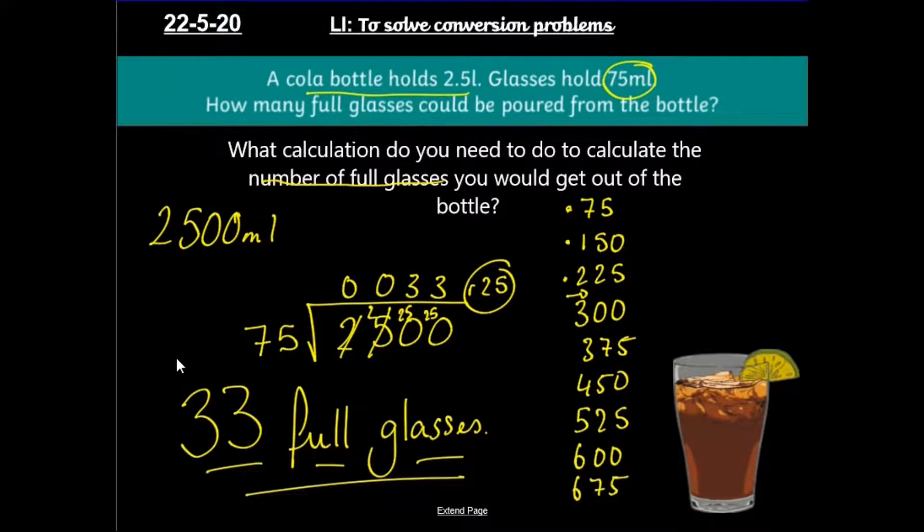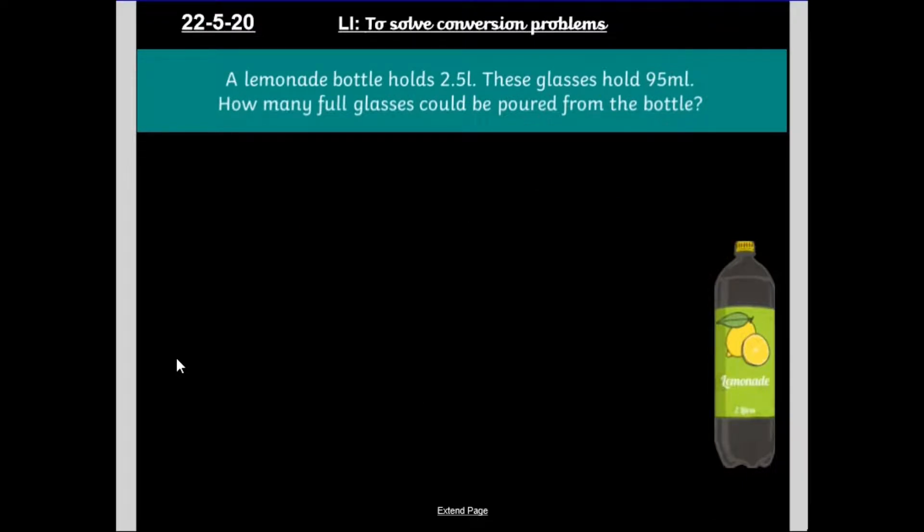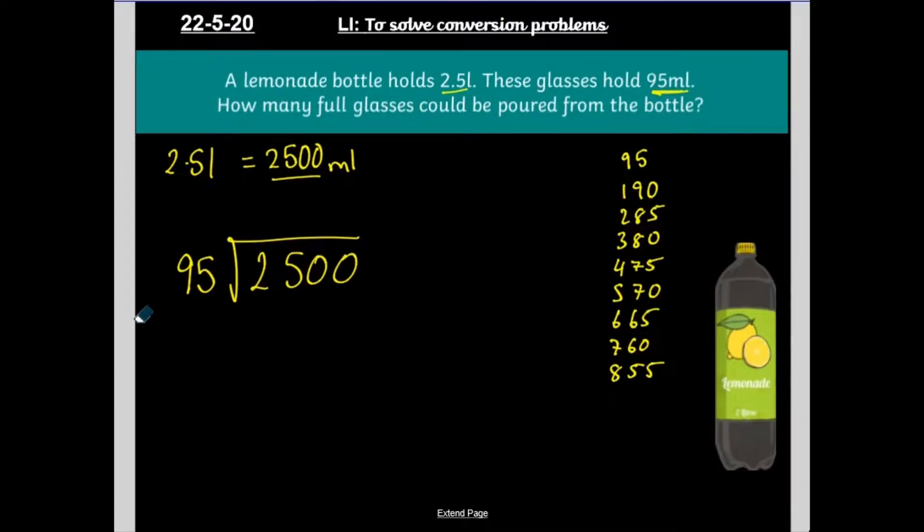So let's look at the next problem. A lemonade bottle holds 2.5 litres. These glasses hold 95 millilitres. How many full glasses could be poured from this bottle of lemonade? So again, the first step here is to make these units of measurements the same. So 2.5 litres, what is that in millilitres? Well, again, it's 2,500. So that's my first step. Make the units of measurement the same. Second step is to now start to work out how many full glasses I could get. So I'm going to be doing a similar thing here. This time I'm going to be doing 2,500 divided by the 95 millilitre cups. And what would that give me? Again, if you need the help, write down that times table on this side here. And like magic, there is my 95 times table.